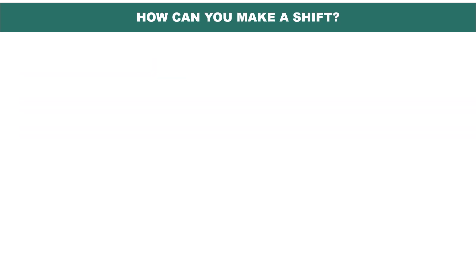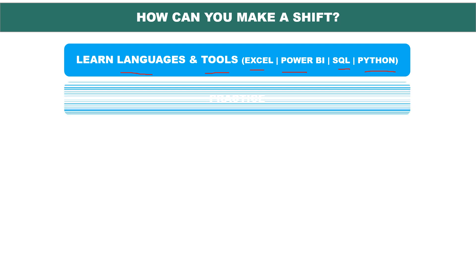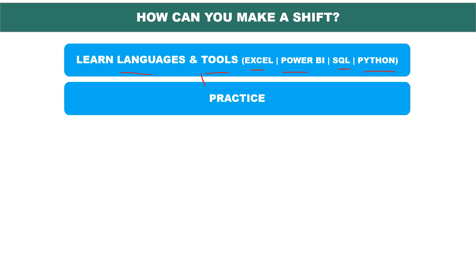How can you make a shift? Now you know the skill set required. First of all, learn the languages and tools — Excel, Power BI, SQL, Python. These are very important, and without them you can't become a data analytics person. Once you have learned, you have to practice. Practice is the key — even if you have grasped all the languages but don't practice, you can't become a data analytics person. It is very important to practice.